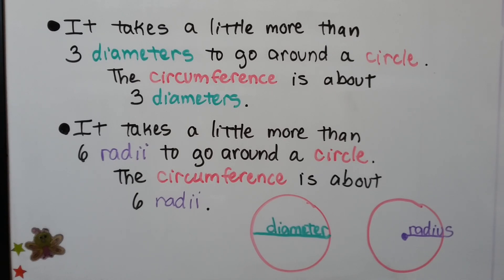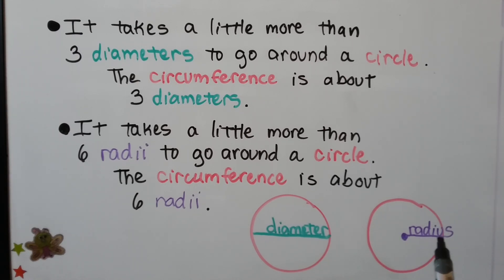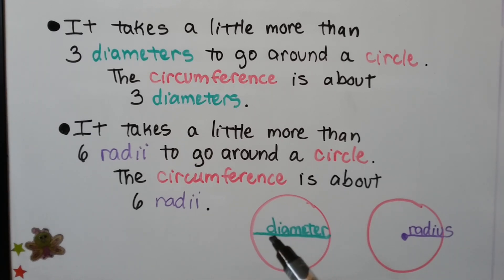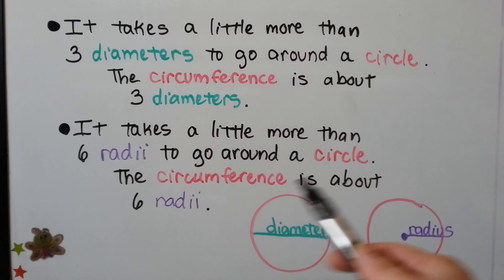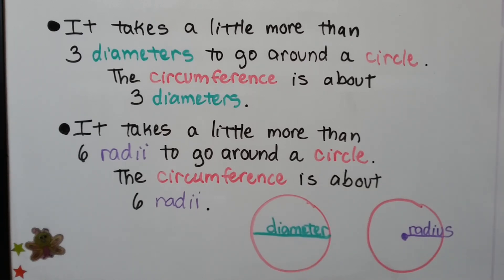It takes a little more than 3 diameters to go around a circle, so the circumference is about 3 diameters. It takes a little more than 6 radii to go around a circle. The diameter goes all the way across, and the radius goes from the center to the side — so 2 radii make 1 diameter. Pi is approximately 3.14, and multiplying by the diameter gives the circumference — about 3.14 diameters.